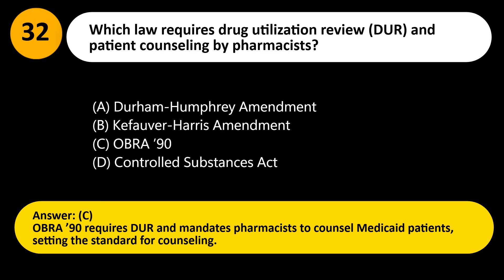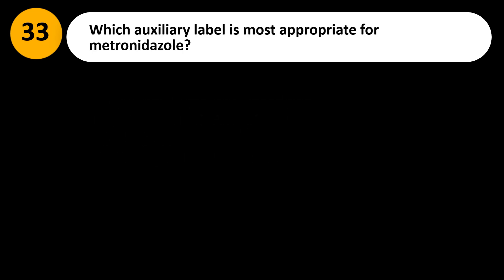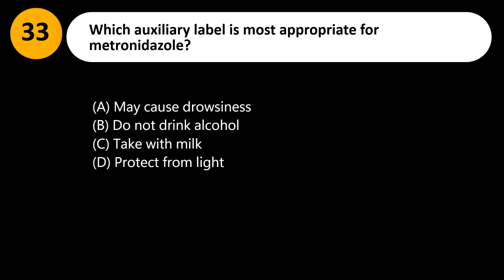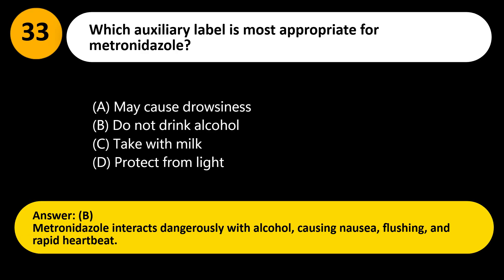Which auxiliary label is most appropriate for metronidazole? A. May cause drowsiness. B. Do not drink alcohol. C. Take with milk. D. Protect from light. Answer: B. Metronidazole interacts dangerously with alcohol, causing nausea, flushing, and rapid heartbeat.